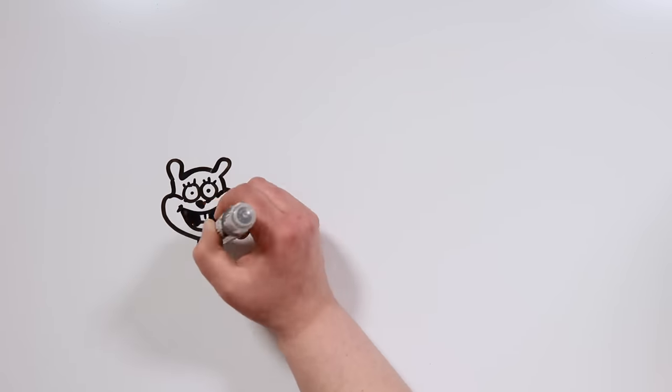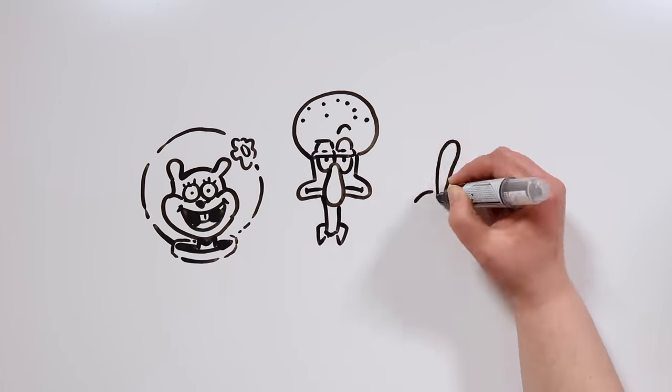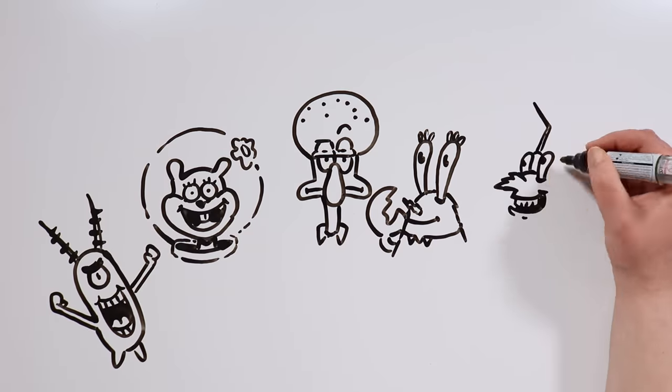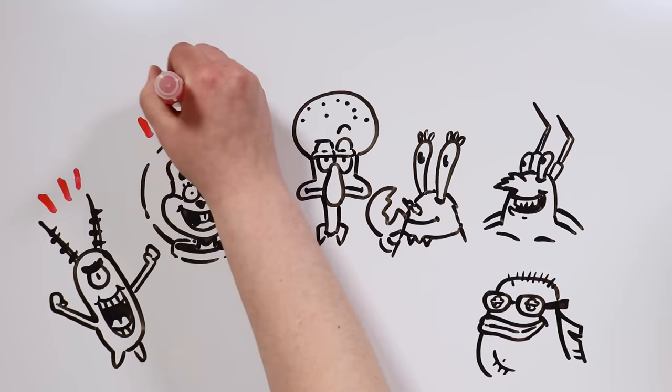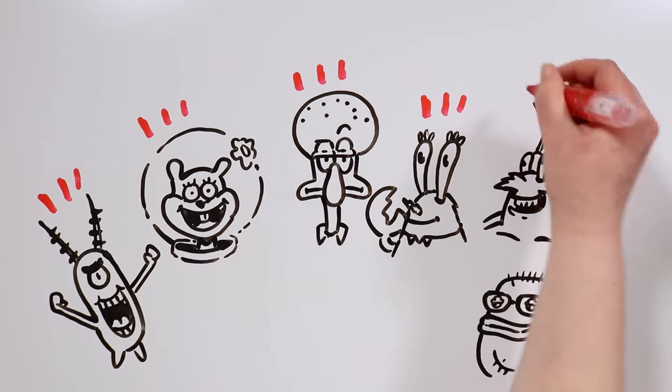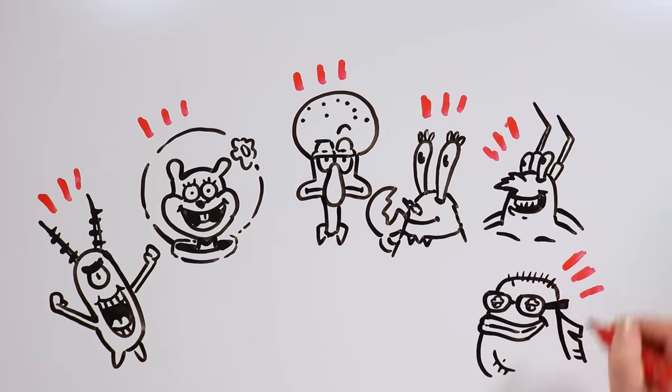In these illustrations, we can find Sandy, Squidward, Mr. Krabs, Plankton, Larry, and even Bubble Bass. And although it has a lot of references to the original show, everything in the comic is very dark and terrifying.